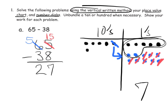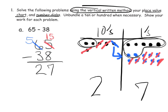Our directions say we need to take away three tens. We have five tens, and we take away three tens — one, two, three — that leaves us with two tens. So the answer is two tens and seven ones, which is twenty-seven.